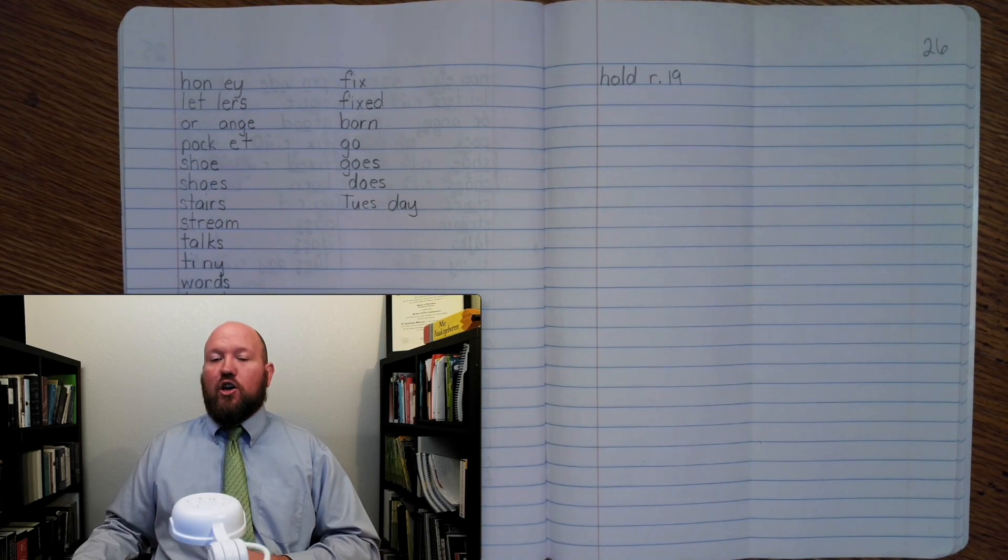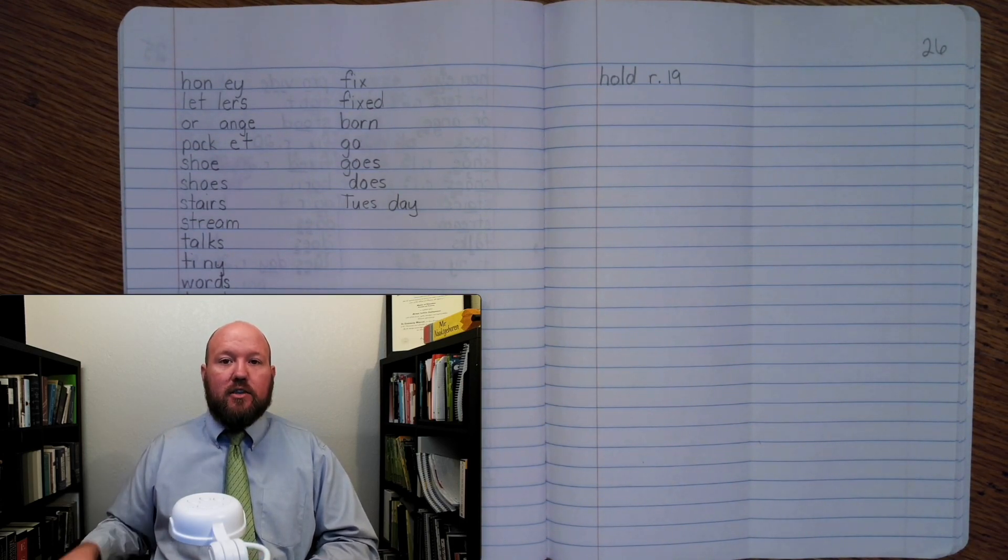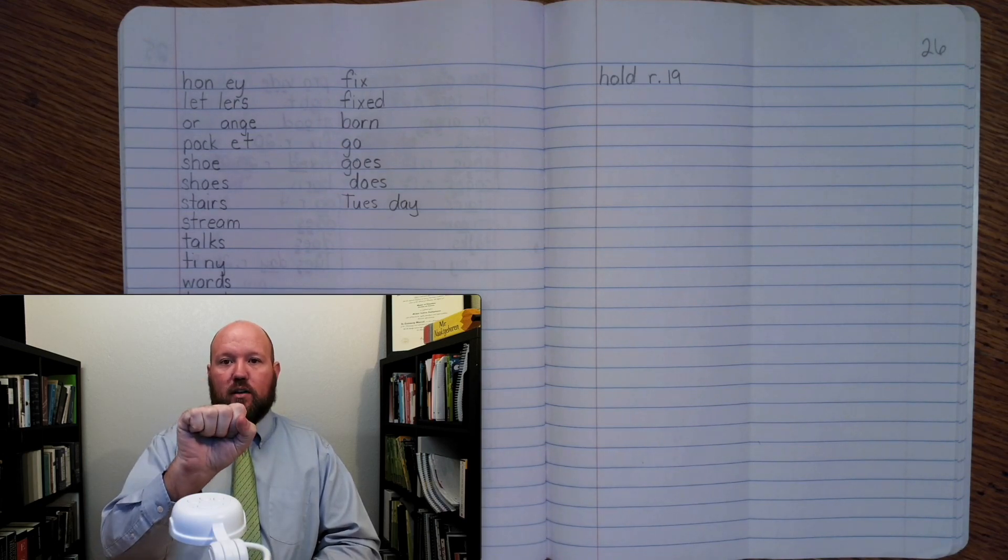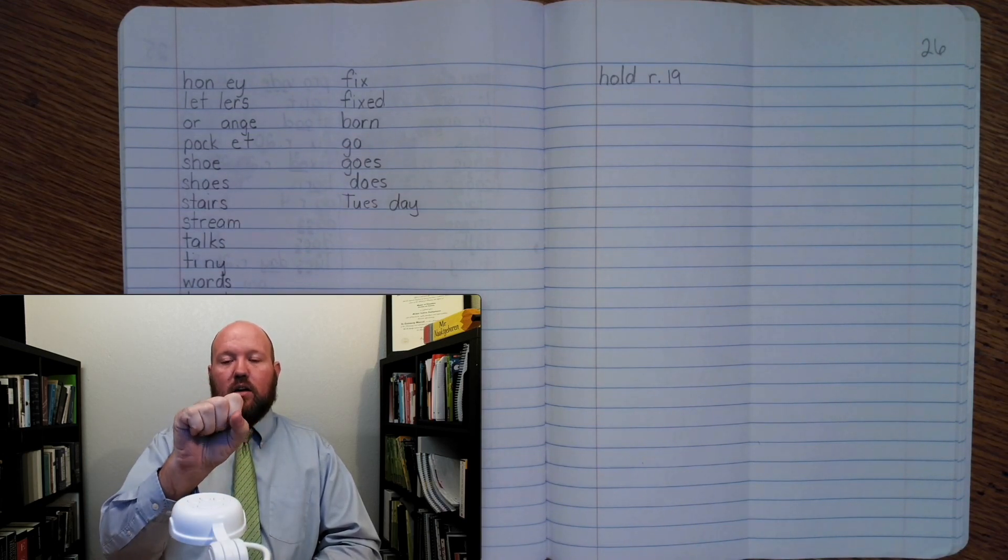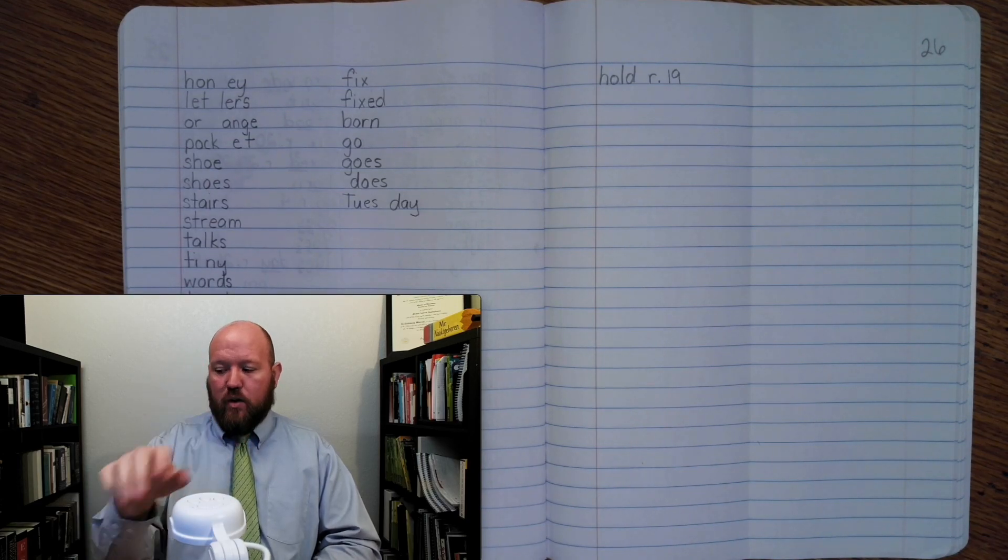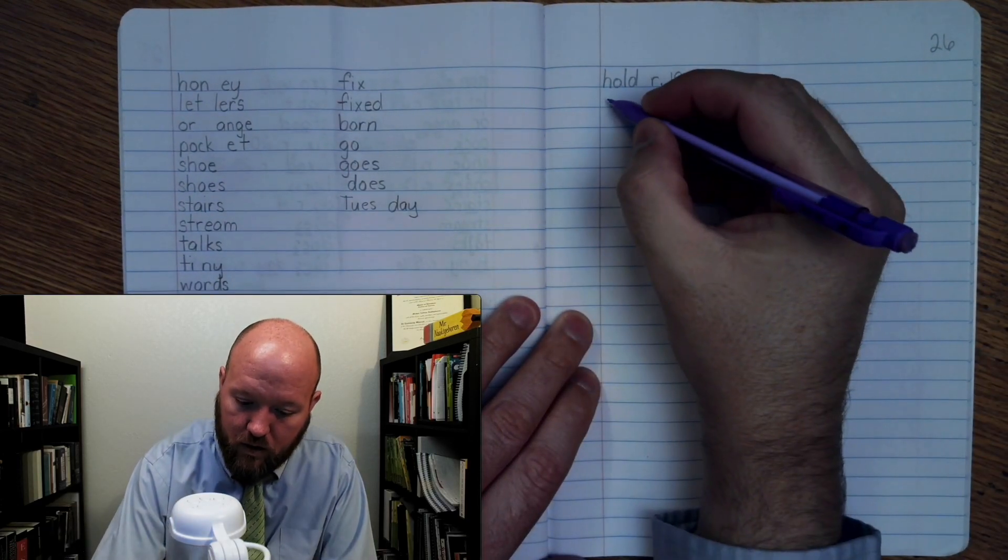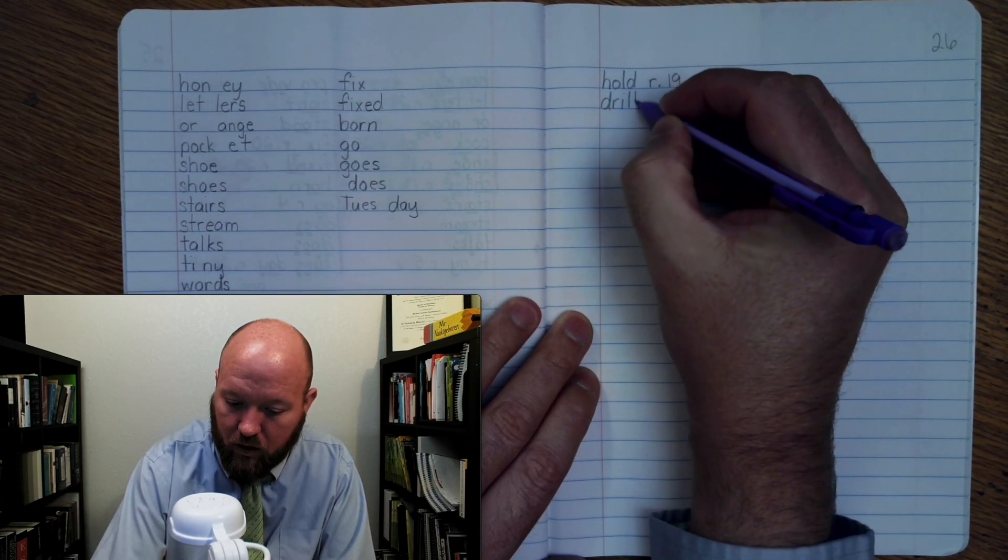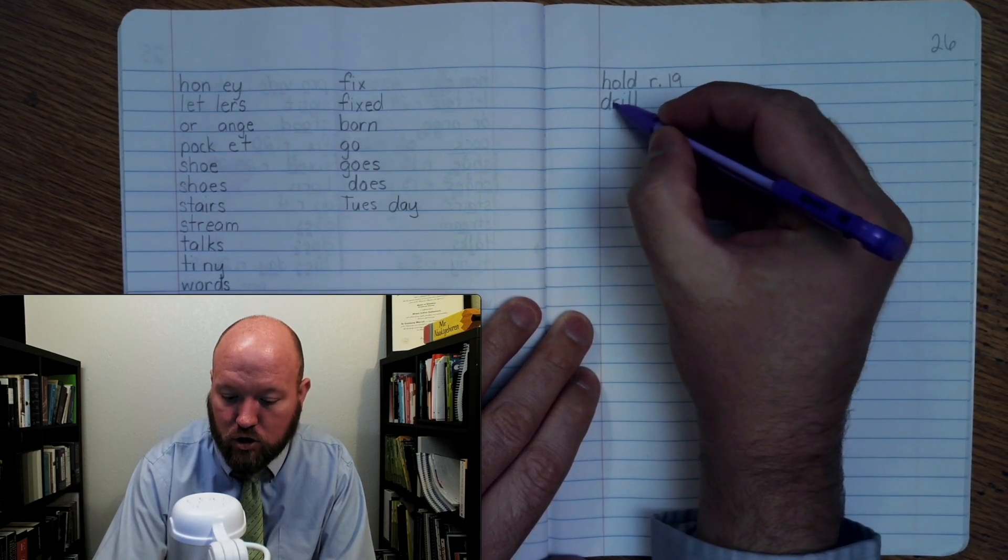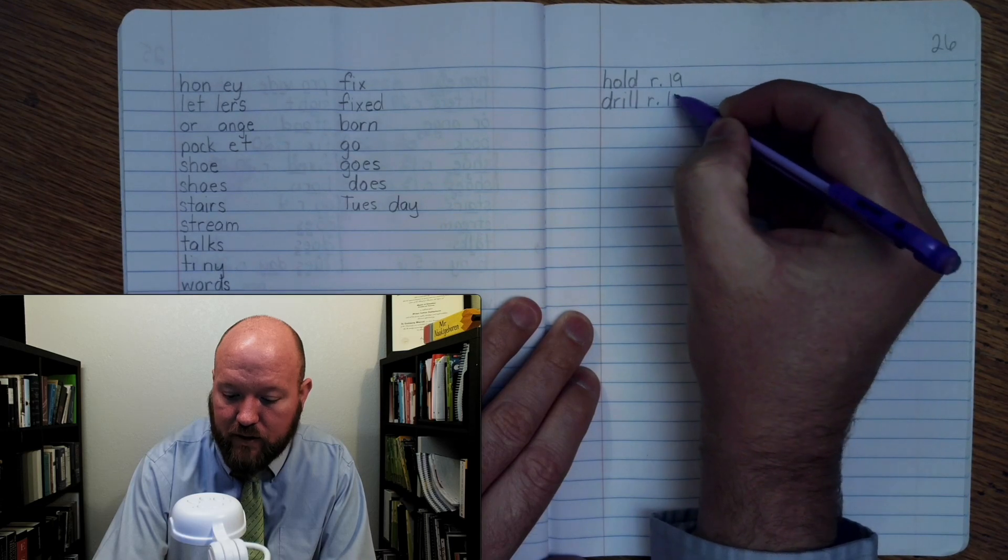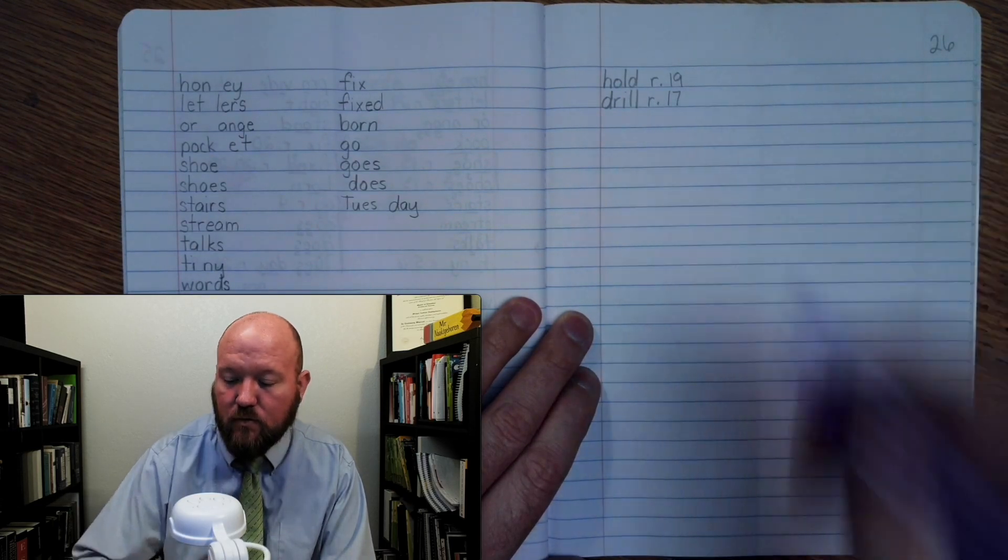Next is the word drill, like 'please drill a hole in the wall so we can hang a pitcher.' Base word drill: D-R-I-L-L. Write it: D-R-I-L-L. For markings, D-R-I-L-L uses Rule 17.